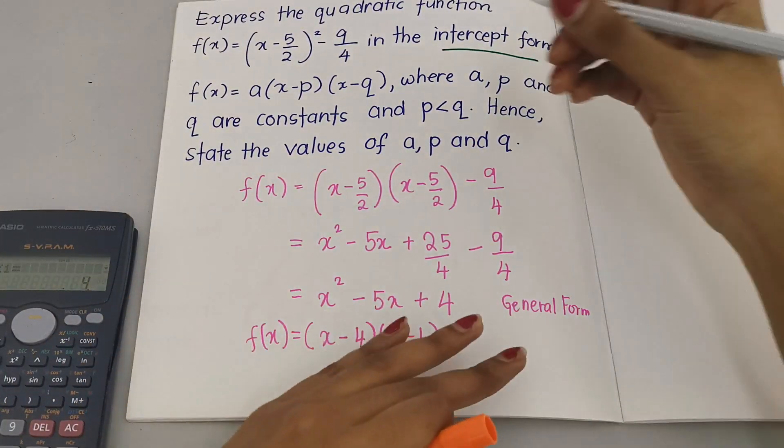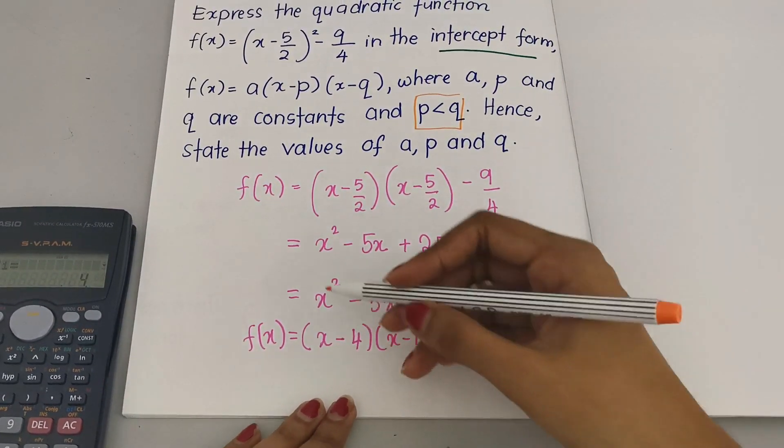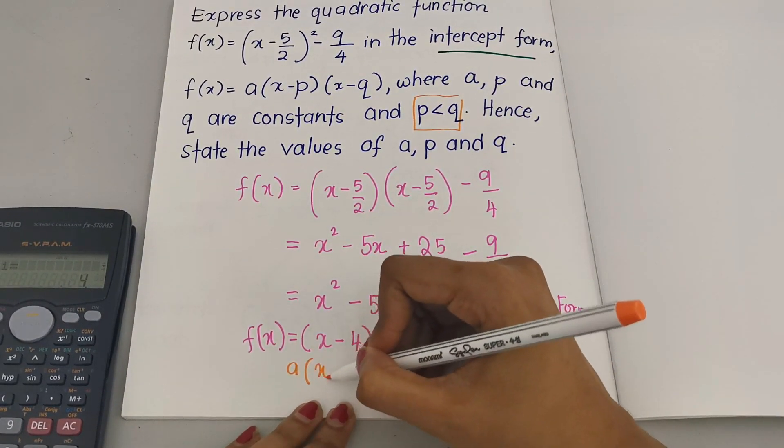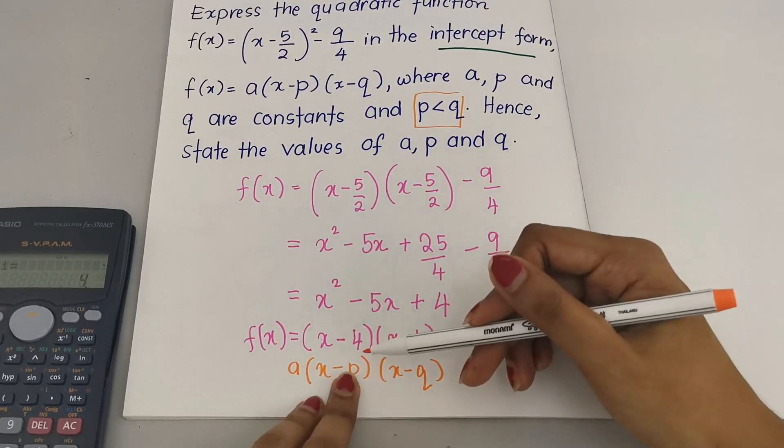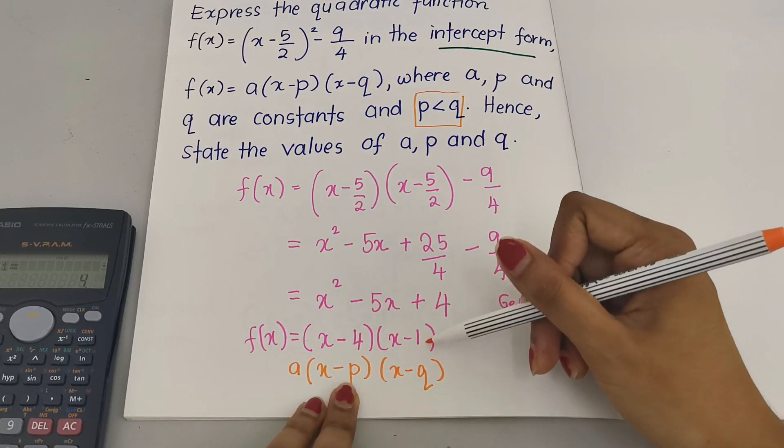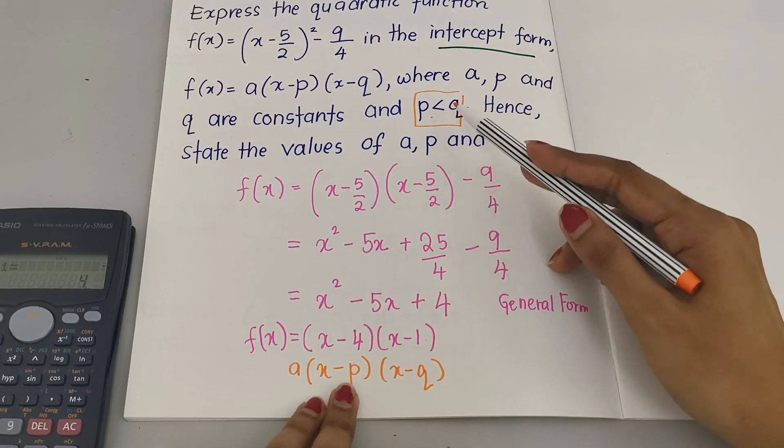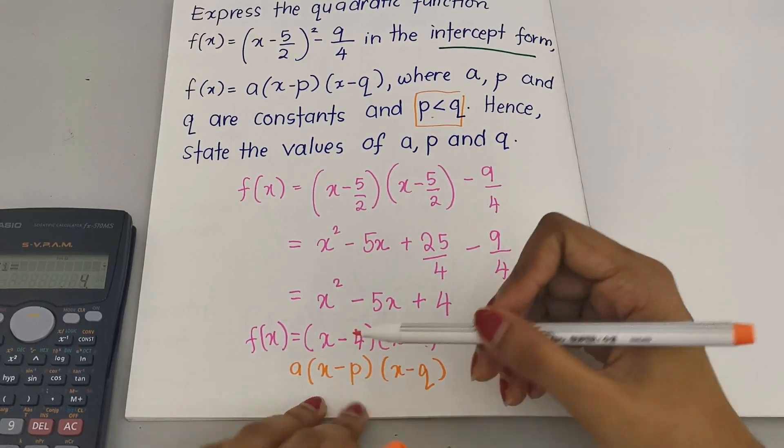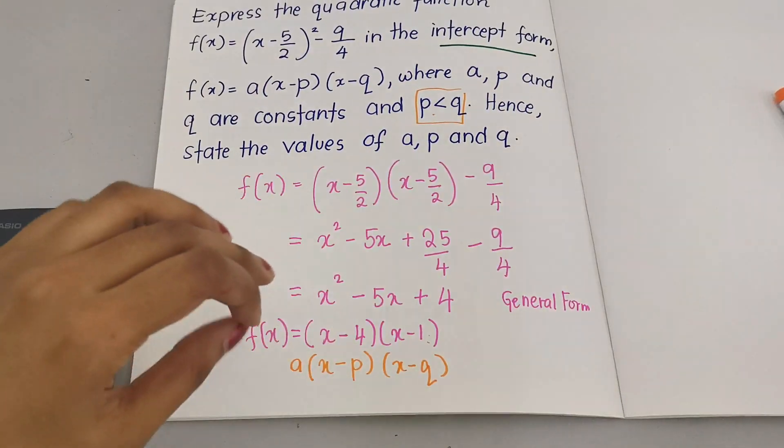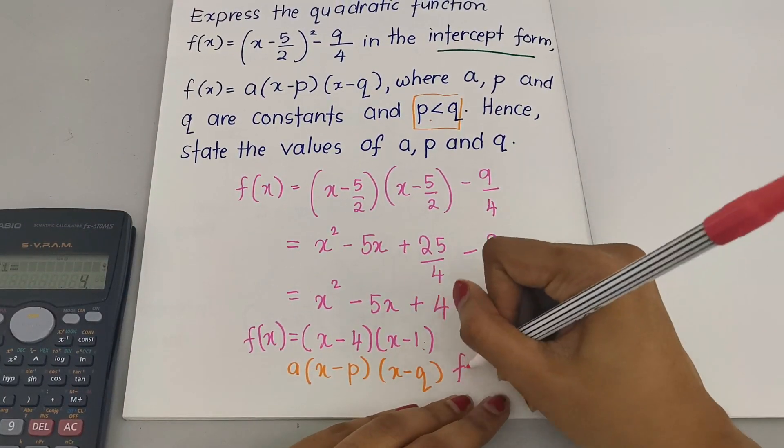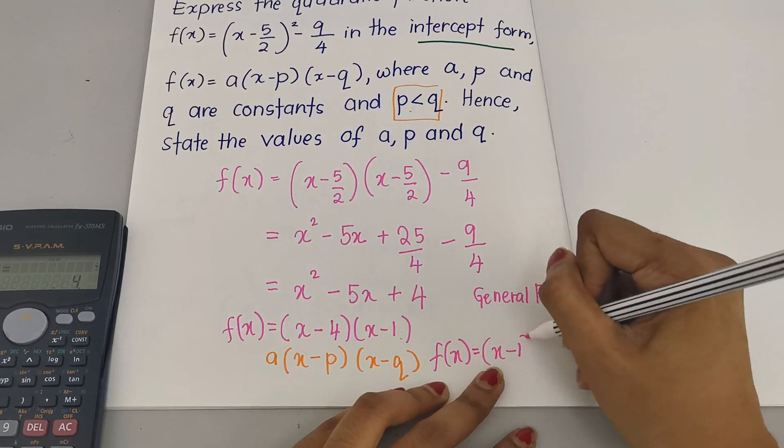But the question states that p is less than q. So if I compare here, looks like the p is 4 and the q is 1. So what I need to do: since the value of p is less than q, I just need to put (x - 1) to the front and (x - 4) to the back. So the final answer of my intercept form will be (x - 1)(x - 4).